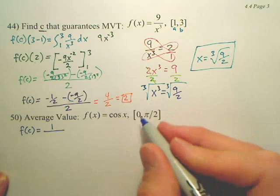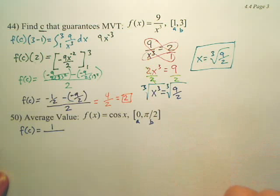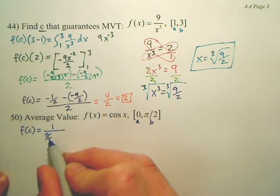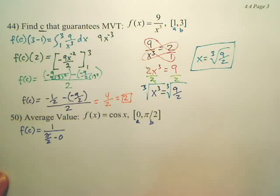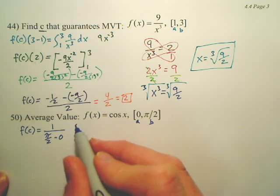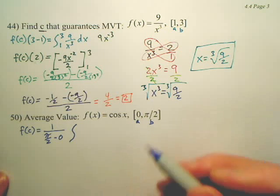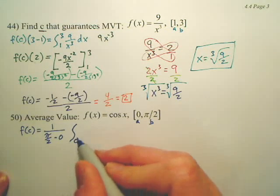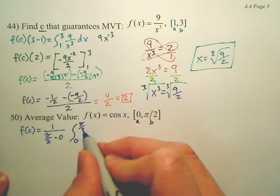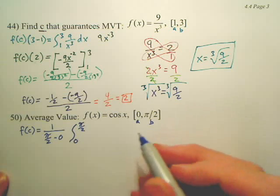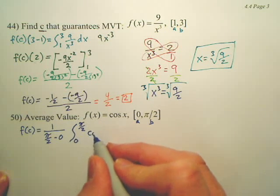Now, what's b minus a? Remember, this is a, this is b. So b minus a is pi over 2 minus 0. That's 1 over b minus a. And then you take the area for this interval, the interval is 0 to pi over 2, and we're taking it of cosine x.